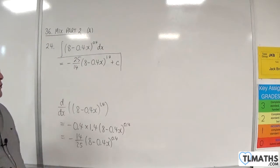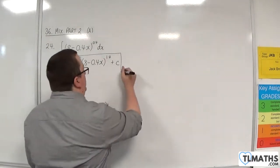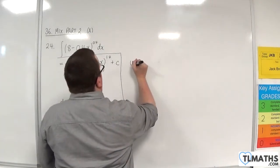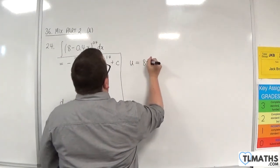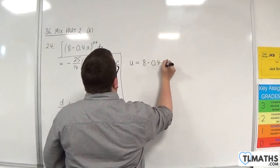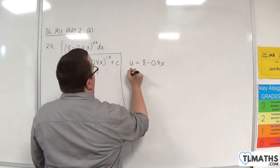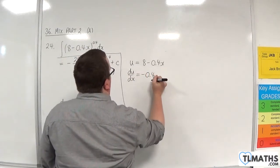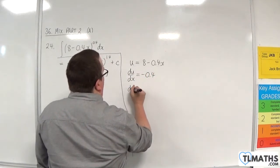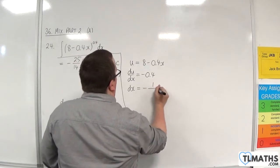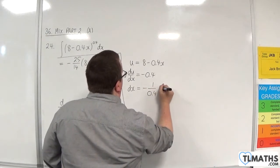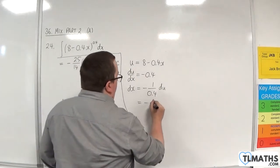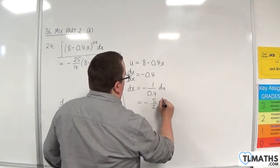Now, if you're not too confident with that, let's do this by substitution. So the substitution you would make would be u is equal to 8 take away 0.4x. So du by dx is minus 0.4. So dx will be minus 1 over 0.4 du. So that's minus 5 halves du.